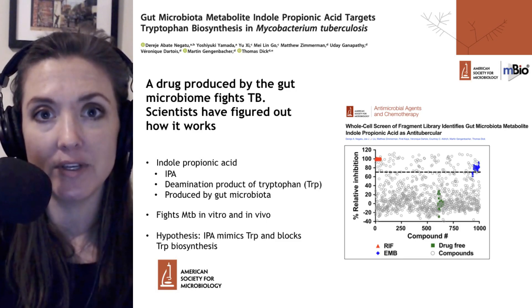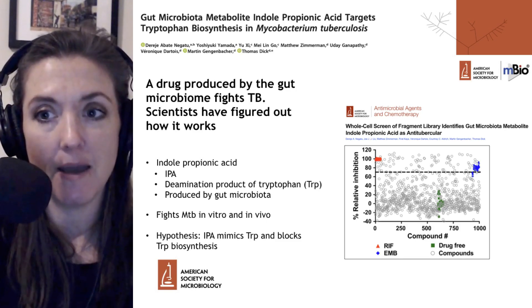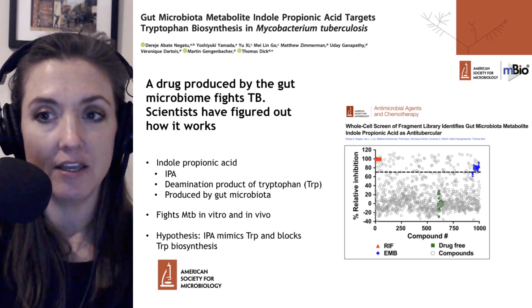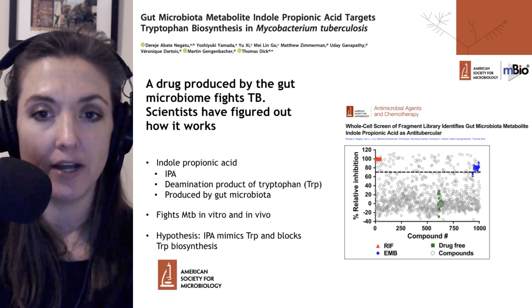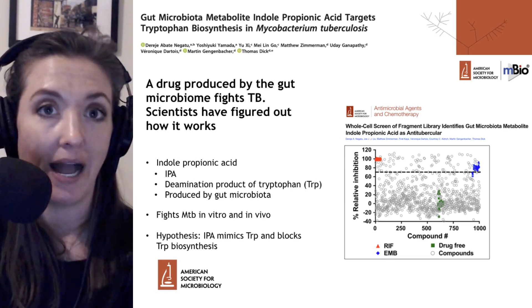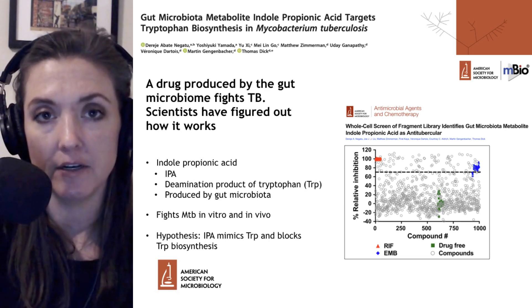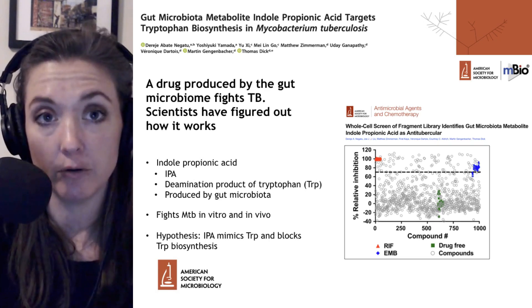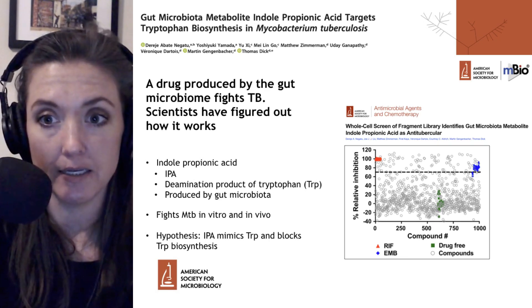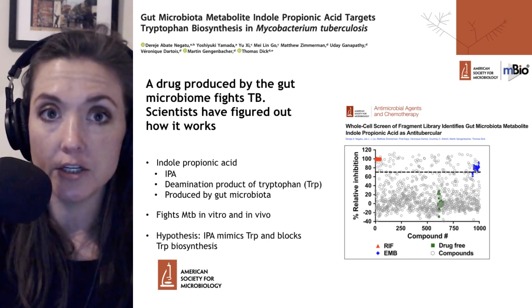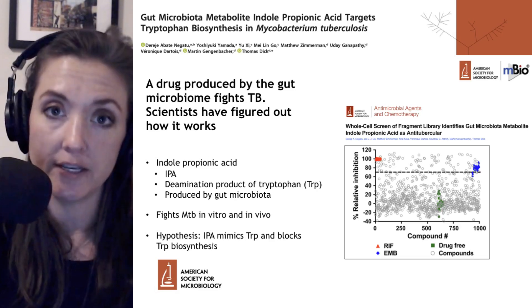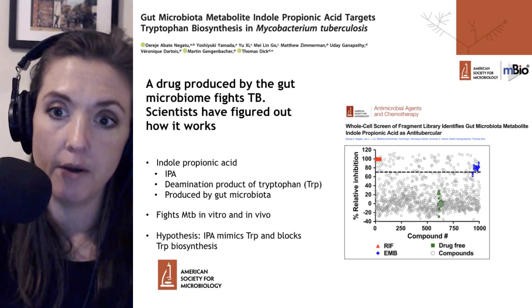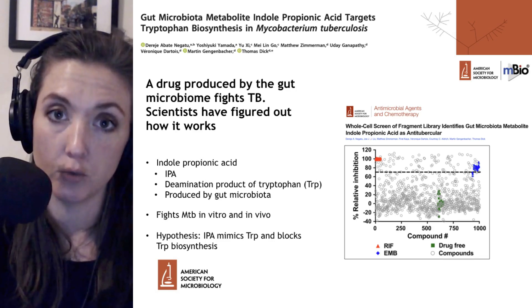Today we're going to discuss a paper from ASM's mBio journal. In this article, they looked at a product called indole propionic acid, or IPA, which was identified in a previous study from Antimicrobial Agents and Chemotherapy, in which a large number of gut microbiota products were tested for their ability to inhibit mycobacterial tuberculosis growth.